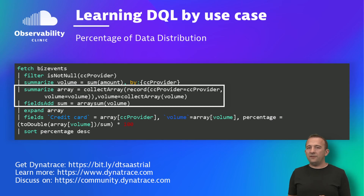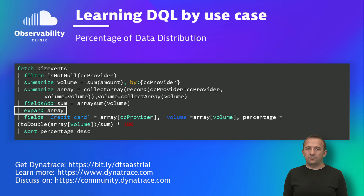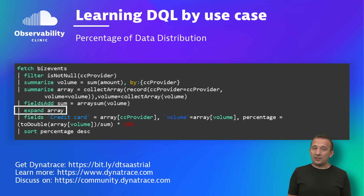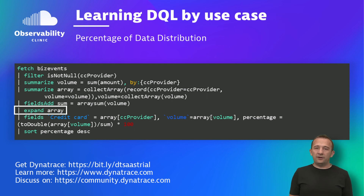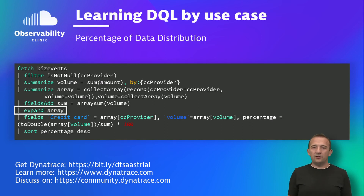Now we have everything stored in one record. Afterwards, you need to expand the array of credit card revenue. With that operation, you have the total revenue and credit card revenue for every record.